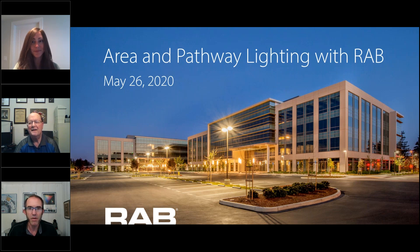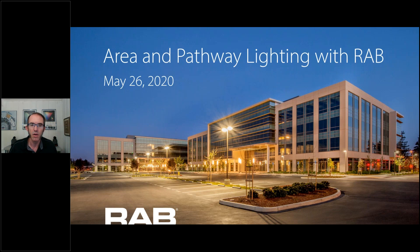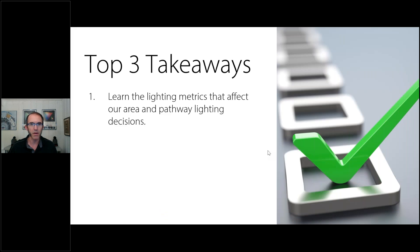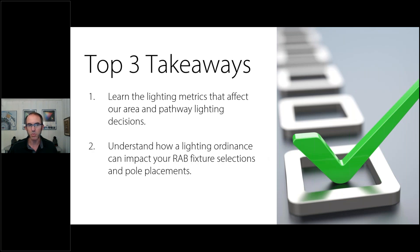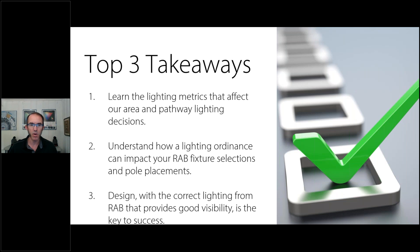Today we're going to be talking about area and pathway lighting, focusing on RAB products. You can see a photo of an office building with high pressure sodium lamps. When we talk about area lighting, we have three takeaways: learn the lighting metrics that affect area and pathway lighting decisions; understand how a lighting ordinance can impact fixture selections and pole placements; and design with the correct lighting from RAB that provides good visibility — the key to success.